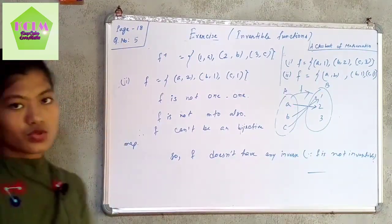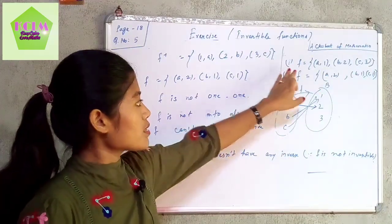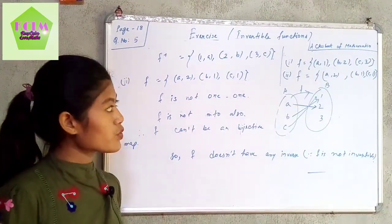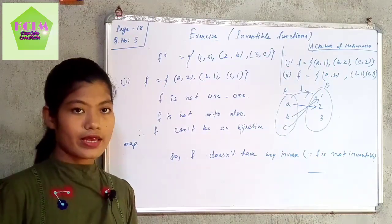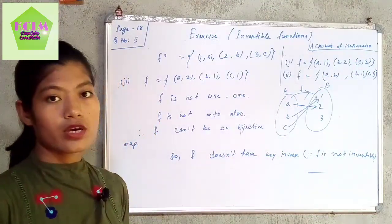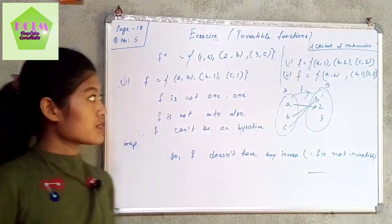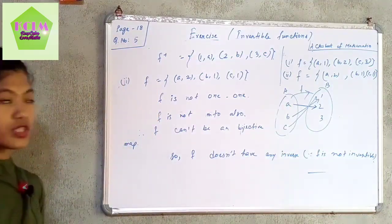So question number 2 is done. In summary: when f is defined as {(a,1),(b,2),(c,3)}, the function is invertible and has an inverse. But when f is defined as {(a,2),(b,1),(c,1)}, we cannot get an inverse. I hope this is clear. If you have any queries, please write in the comment section. Thank you for watching.